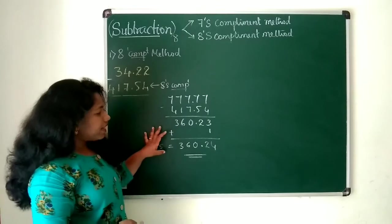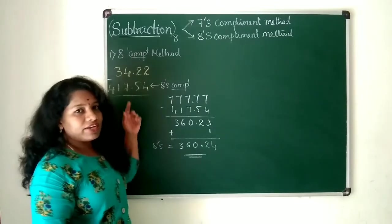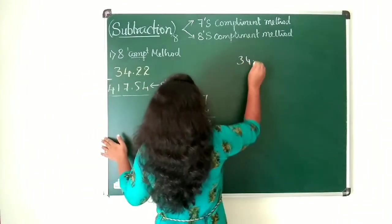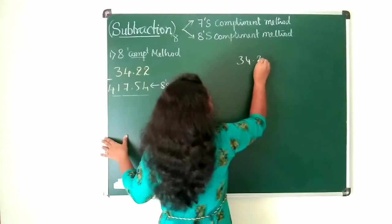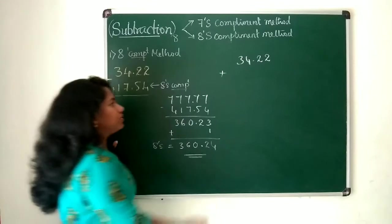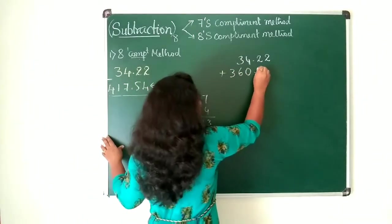Now what you need to do, after taking 8's complemented value for this subtrahend, you need to add that value to the minuend. Let me write that minuend as it is: 34.22. Now add this 8's complemented value: 360.24.